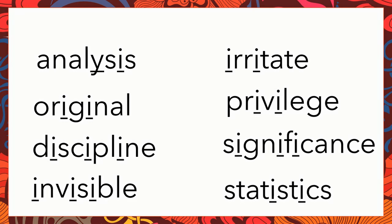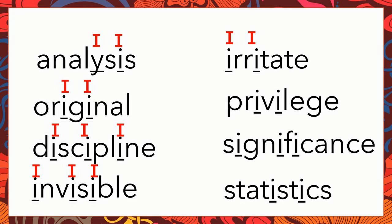And what about this next list of words? What is the sound — is it E or I? Well, obviously it's I. So let's practice: analysis — it's not analysis. Original. Discipline. Invisible. Irritate — that's a hard one because in Tagalog we say kairita, but in English we say irritate. Privilege. Significance. And statistics. When you have this short I sound, you just have to be chill. Like statistics — you don't say statistics, it's statistics.